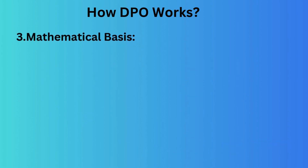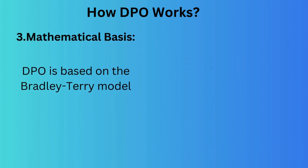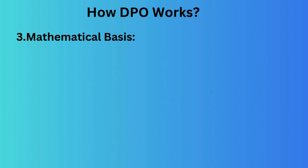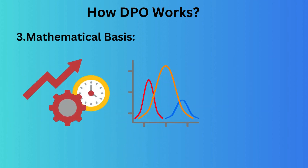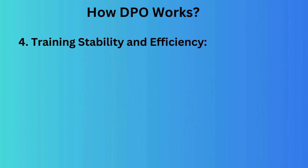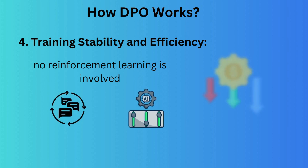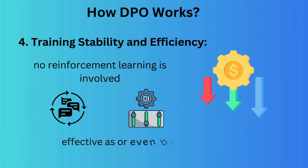Third, mathematical basis: DPO is based on the Bradley-Terry model, which assigns probabilities to human preferences using a log likelihood function. The loss function is designed to maximize the probability of preferred responses without needing reinforcement learning steps. Fourth, training stability and efficiency: since no reinforcement learning is involved, there is no need for sampling loops or hyperparameter tuning, reducing computational costs. The method is as effective as or even better than PPO-based RLHF in improving model behavior.